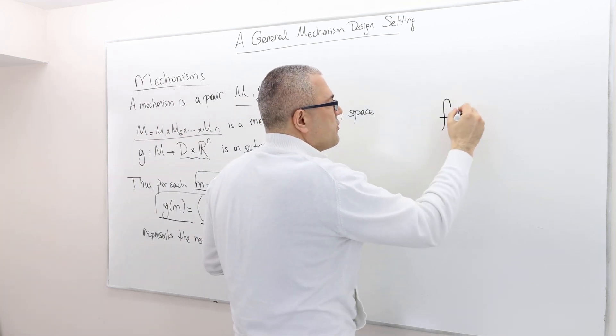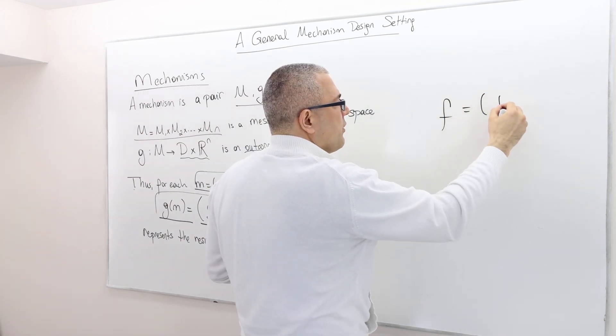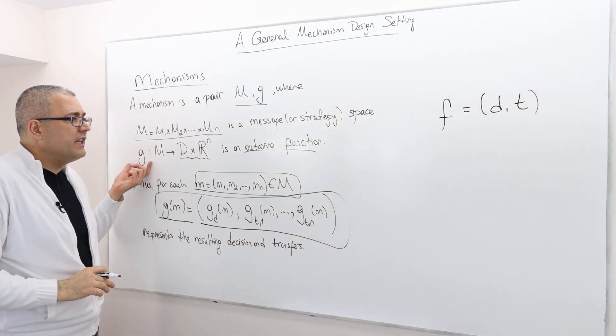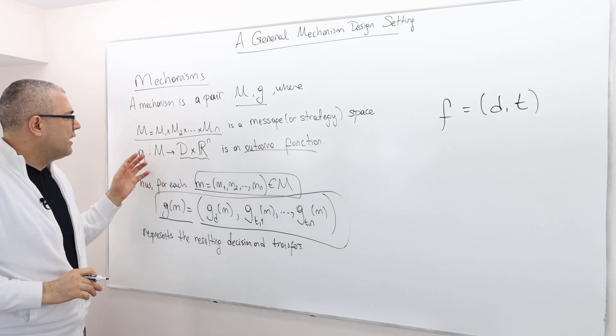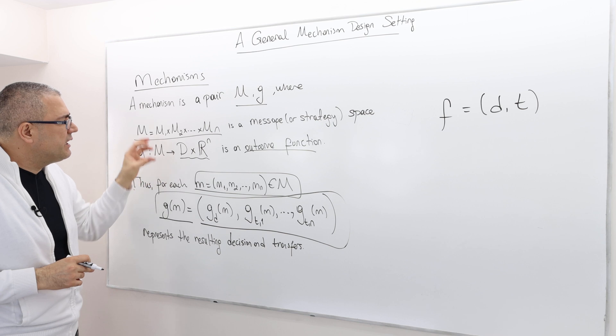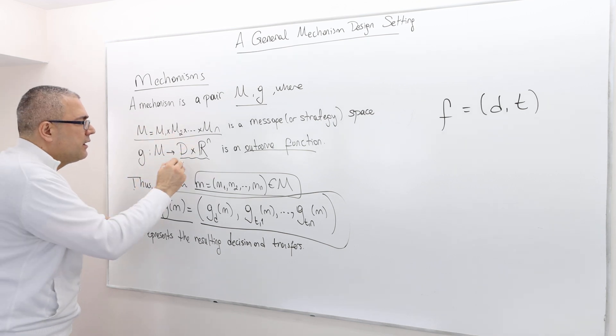So remember the social choice function had two components, D and T, right? So therefore, G is in fact what G does is choosing a social choice function, right?